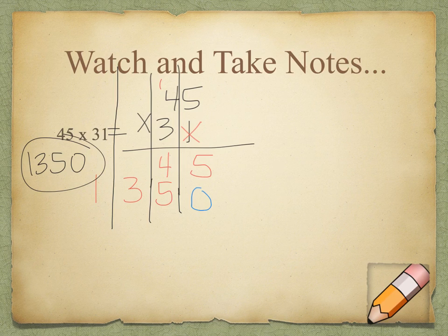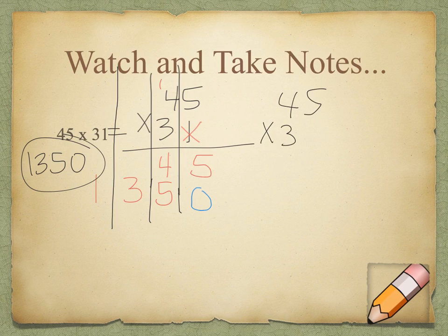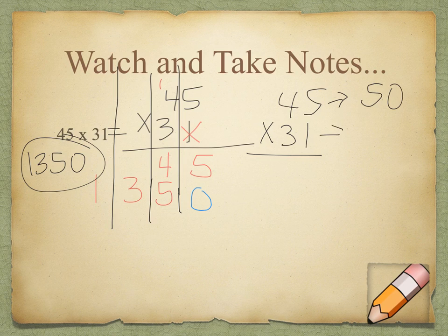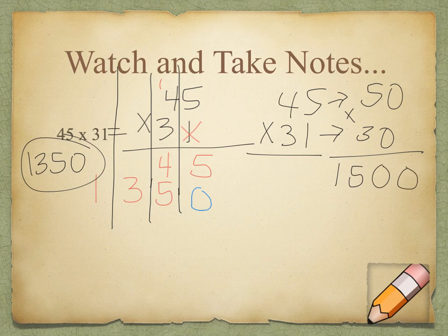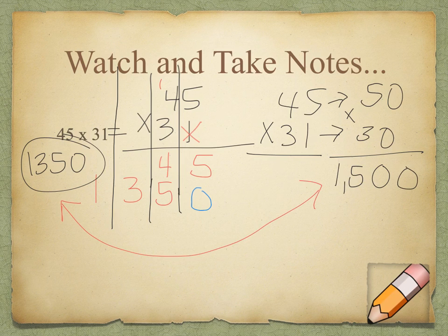We're going to estimate this one to see if our answer is reasonable. So 45 times 31, I'm going to round 45 to 50, and 31 to 30. So I get some nice friendly numbers that I can multiply easily. 50 times 30, I know 5 times 3 is 15. So 50 times 30 is 1,500. I can say that 1,500 is fairly close to 1,350. So my answer is definitely reasonable.